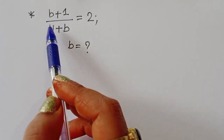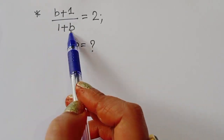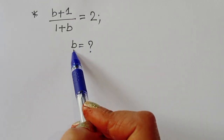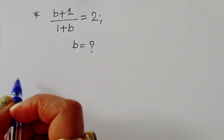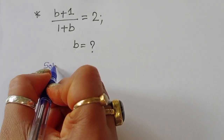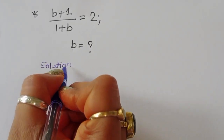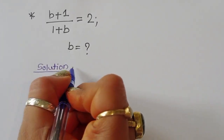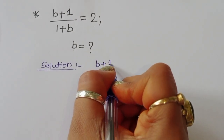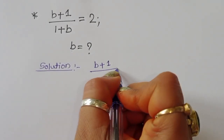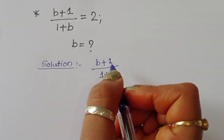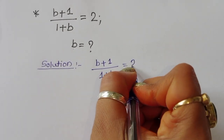We are given (b + 1) divided by (1 + b) is equal to 2, and we have to find out the value of b. Let's see the solution. We write: (b + 1) divided by (1 + b) is equal to 2.